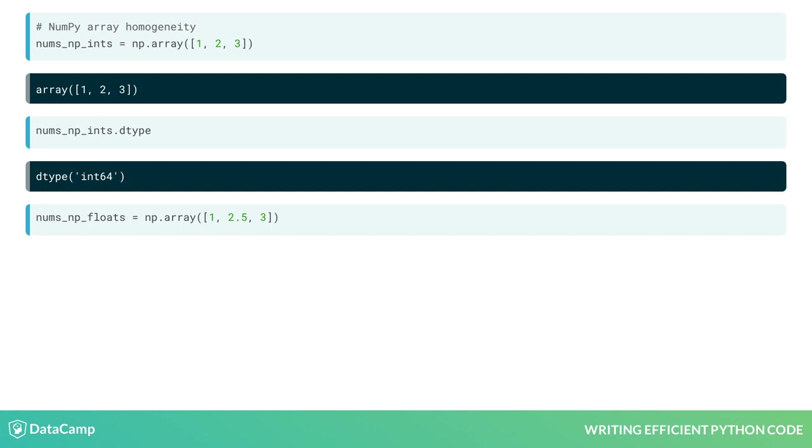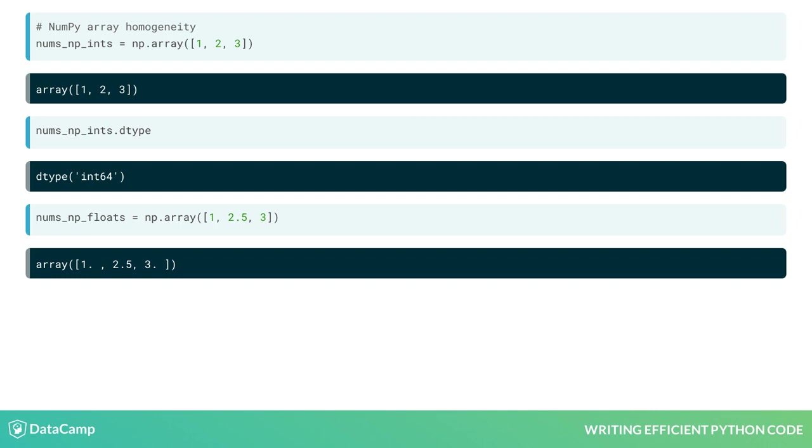Here, we create the array nums_np_floats using the integers 1 and 3 and a float 2.5. Can you spot the difference in the output? The integers now have a preceding dot in the array. That's because NumPy converted the integers to floats to retain that array's homogeneous nature.